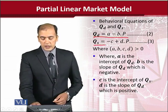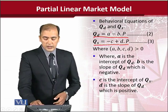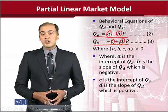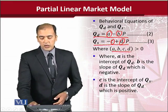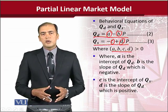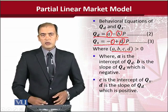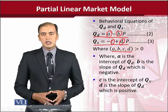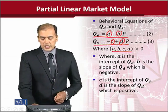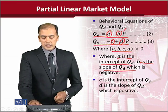QD and QS each have their respective functional forms. The parameters A, B, C, and E are all kept positive so that we can observe their interpretation in terms of slope and intercept. By keeping them positive, we can see the sign associated with each and interpret the slope and intercept clearly. A is the intercept of QD and B is the slope of QD.